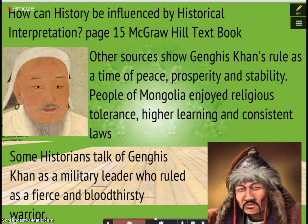Some resources and historians say that when Genghis Khan was ruler of Mongolia, there was a time of peace, prosperity, and stability — that the people of Mongolia enjoyed religious tolerance, higher learning, and consistent laws. However, most often in history, Genghis Khan is seen as a bloodthirsty, fierce warrior and military leader who basically took no prisoners. These two different accounts of Genghis Khan lead us to historical interpretation: who is the real Genghis Khan, and what evidence is more credible to prove one way or the other?